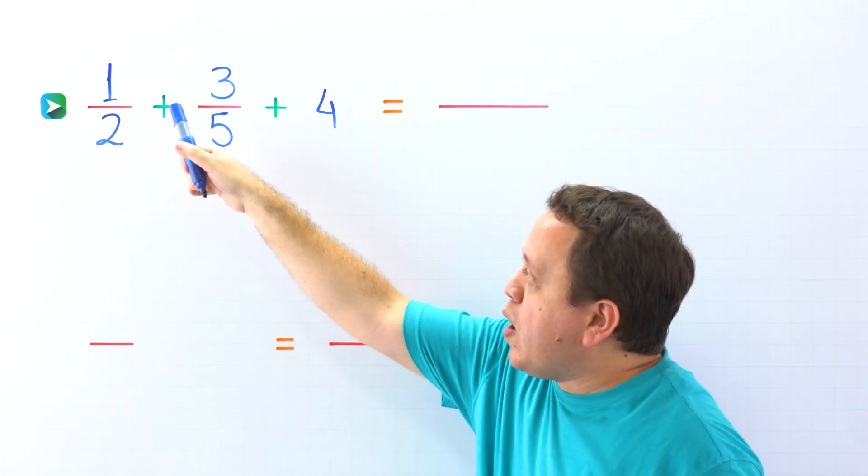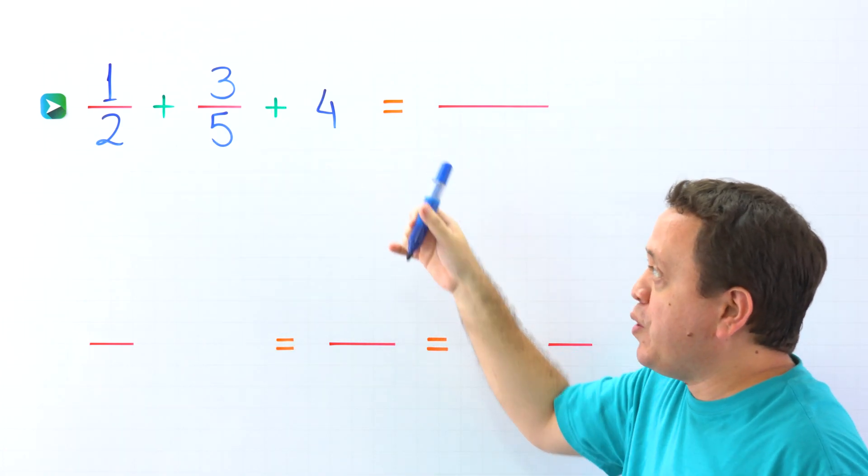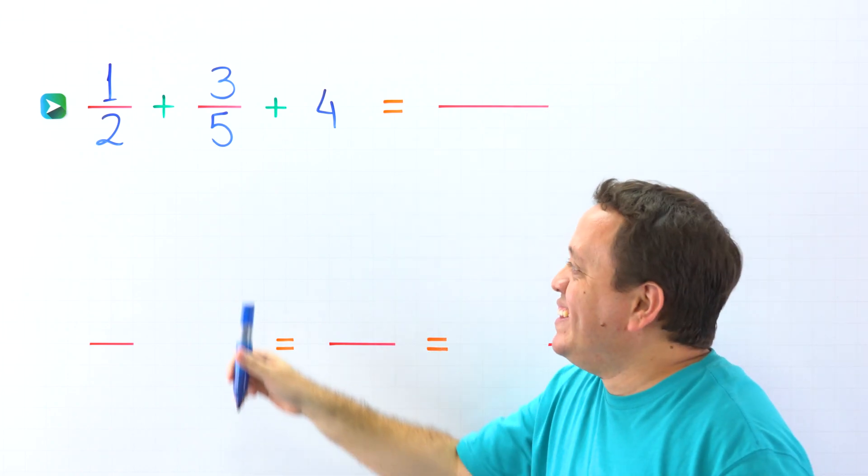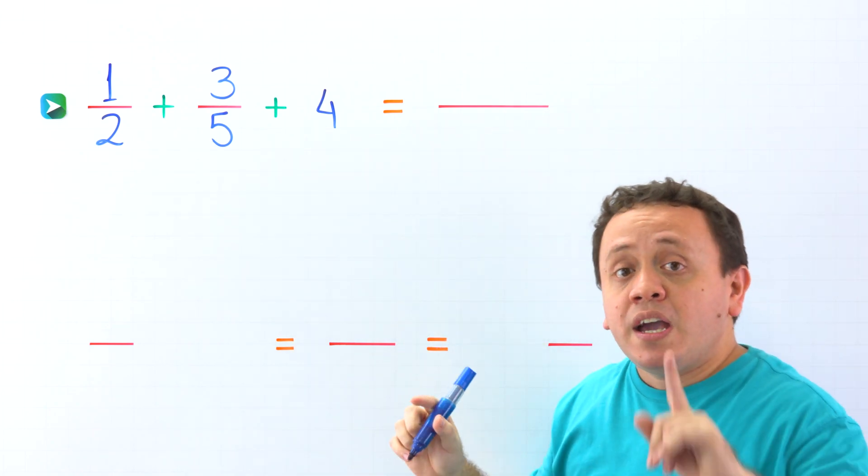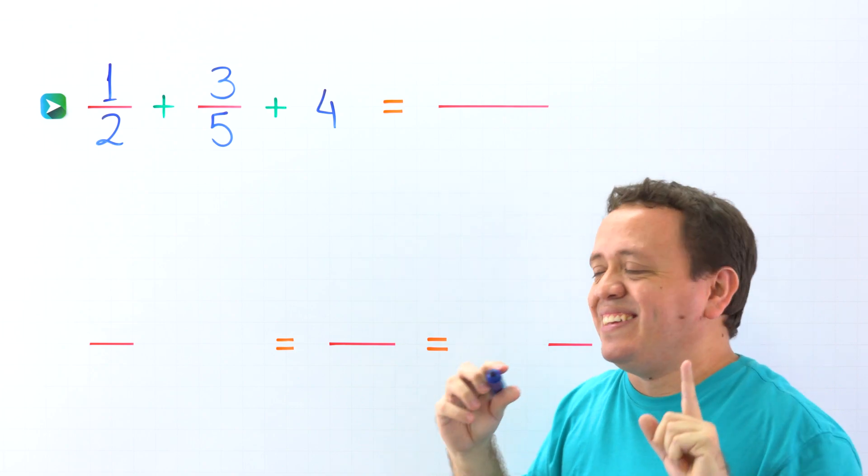In this example, we need to add 1 half plus 3 fifths plus 4. And there are several methods to add two fractions to a whole number. However, my favorite strategy is this one.